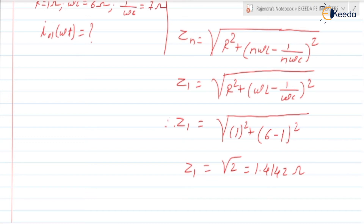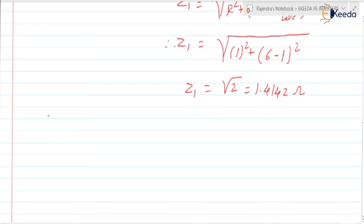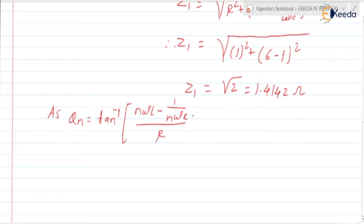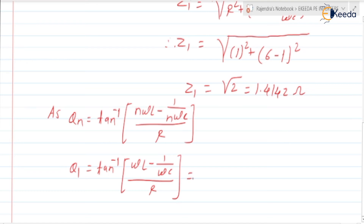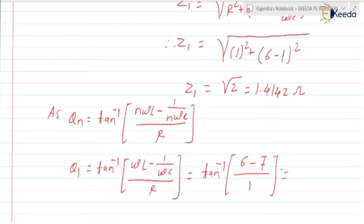Now we find θ₁. For an RLC load, θₙ = tan⁻¹[(N·ωL − 1/(N·ωC)) / R]. For N = 1, θ₁ = tan⁻¹[(ωL − 1/(ωC)) / R] = tan⁻¹[(6 − 7) / 1] = tan⁻¹(−1) = −45 degrees, or equivalently −π/4 radians. So now we have both Z₁ and θ₁.